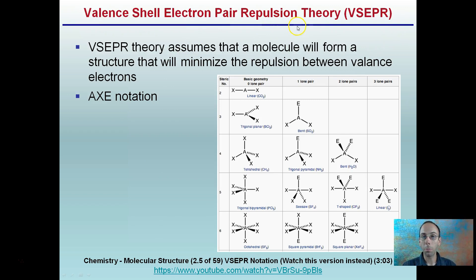VSEPR theory assumes that a molecule will form a structure that will minimize the repulsion between valence electrons. It's also known as the AXE notation: A standing for the central atom, X for the terminal atoms, E for the free electron pairs.